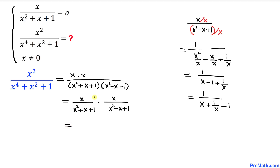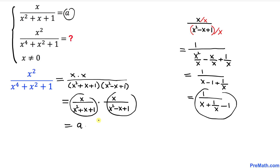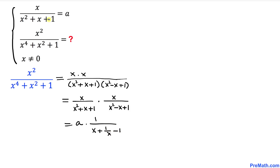So our expression becomes a times 1/(x - 1 + 1/x), which we can write as a · 1/(x + 1/x - 1).